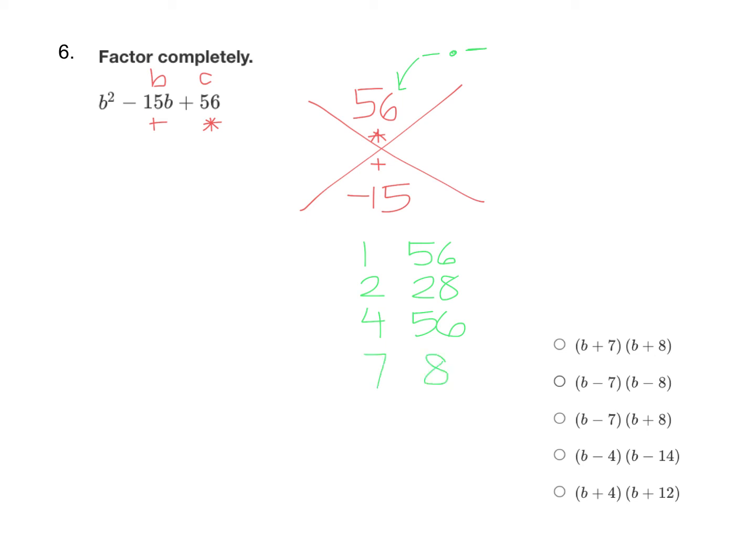Now in order to add to negative 15, we need two negative factors. Notice that 7 plus 8 is 15. So if we just make these both negative, negative 7 times negative 8 multiplies to that positive 56. And when we add them up, negative 7 plus negative 8 is negative 15.